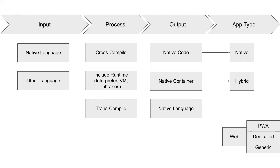The process category is what the build chain does to the input in order to create an output. I mentioned cross-compilation and trans-compilation earlier, but to clarify: cross-compilation is when a high-level language is compiled directly to the native code for various platforms before outputting the final product for each platform. This is called ahead-of-time compilation.